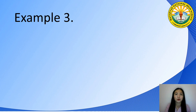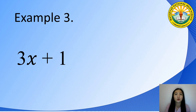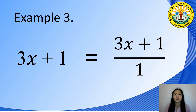Another example: we have 3x plus 1. Do you think it is a Rational Algebraic Expression? A polynomial is always a Rational Algebraic Expression because we can rewrite it as a fraction with a denominator of 1. Therefore, 3x plus 1 is equal to 3x plus 1 all over 1. Thus, it is a Rational Algebraic Expression.